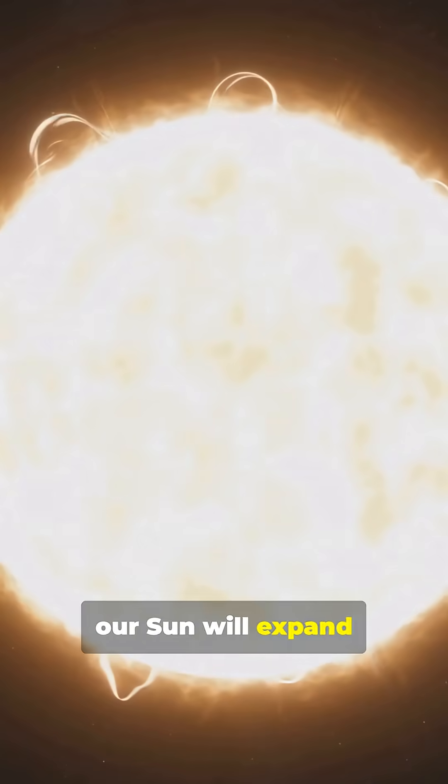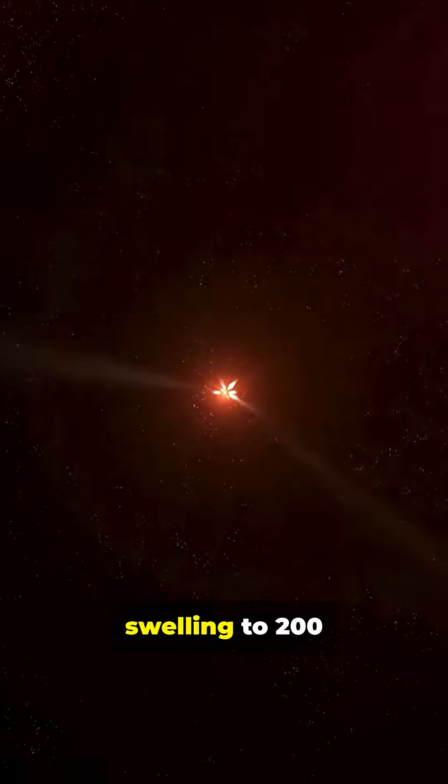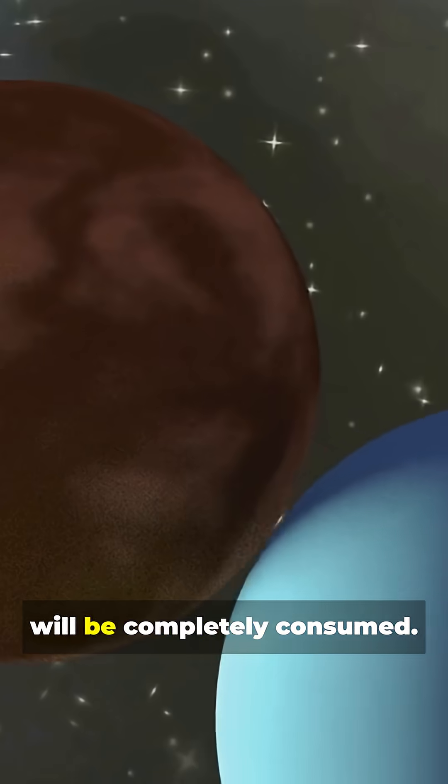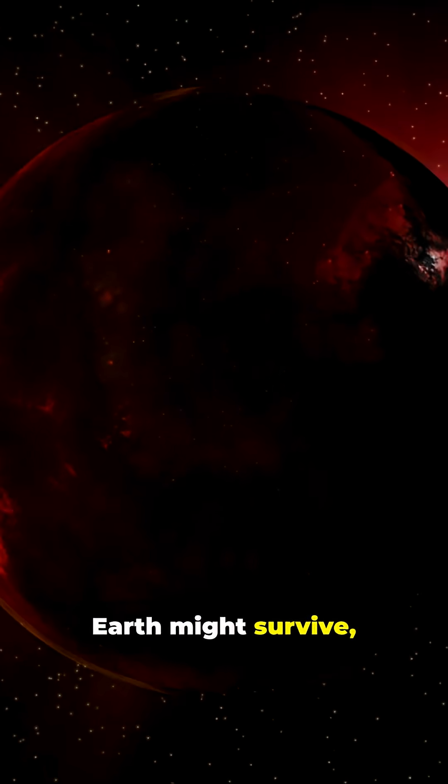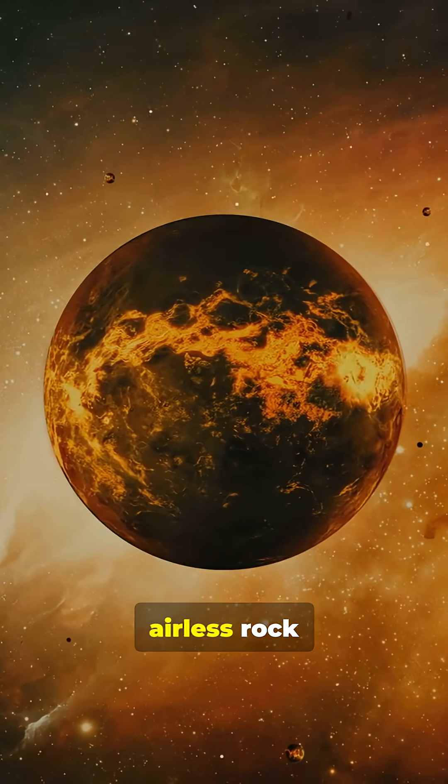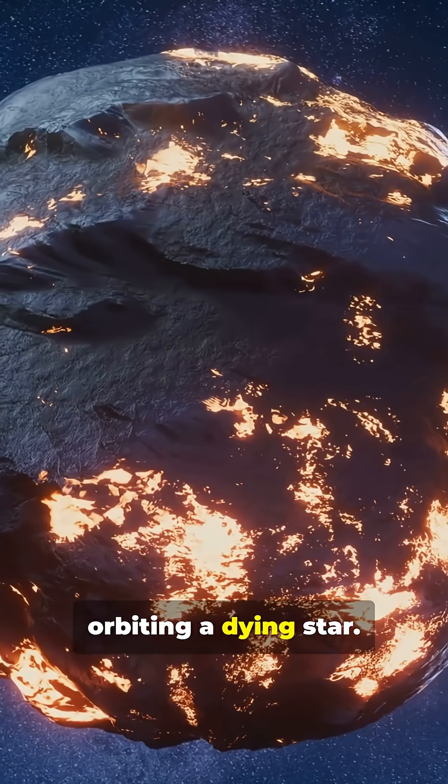In 5 billion years, our Sun will expand into a red giant swelling to 200 times its current size. Mercury and Venus will be completely consumed. Earth might survive but barely, a charred airless rock orbiting a dying star.